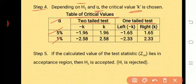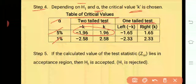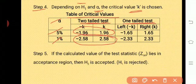If the critical region is at both tails of the distribution, it is a two-tailed test. If the critical region is at one side, it is called a one-tailed test. For 5% and two-tailed test, the critical values are minus 1.96 and plus 1.96 — lower tail is minus 1.96 and upper tail is 1.96. For 1% and two-tailed test, the critical values are minus 2.58 and plus 2.58.